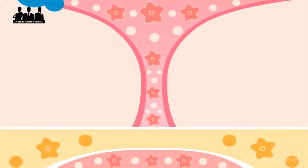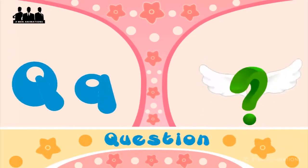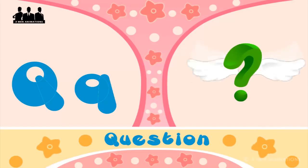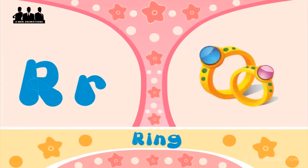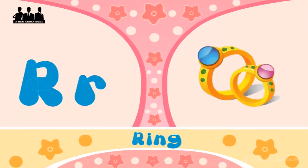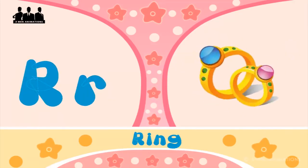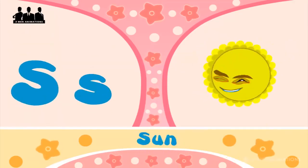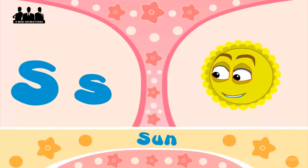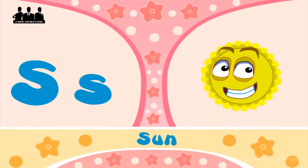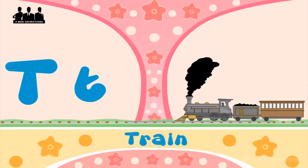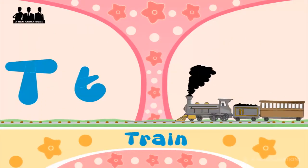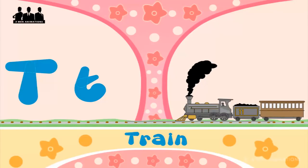Q is for question, q-q-question. R is for ring, r-r-ring. S is for sun, s-s-sun. T is for train, t-t-train.